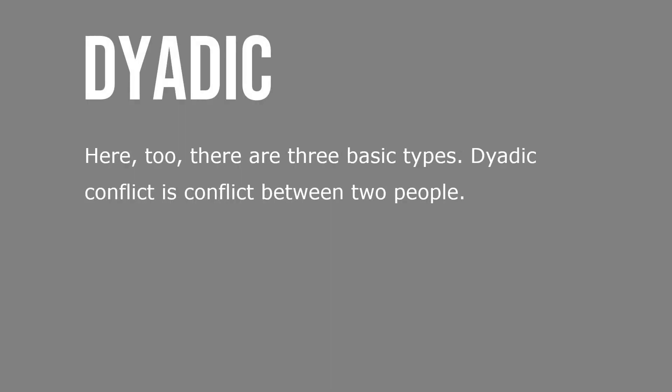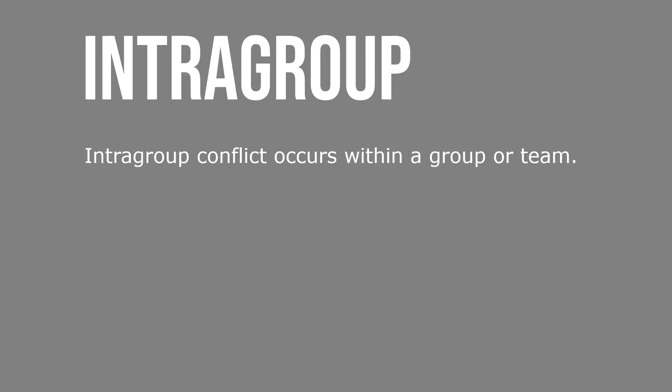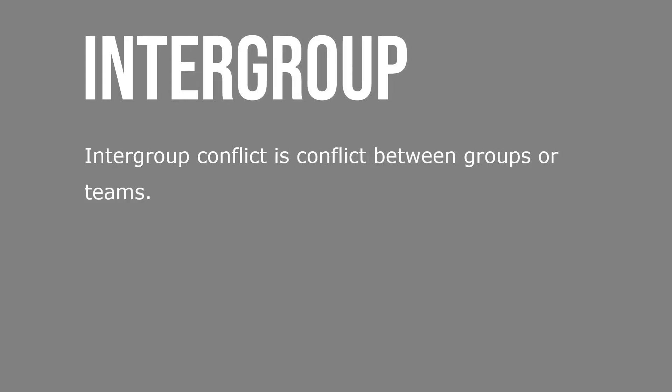Dyadic conflict is conflict between two people. Intragroup conflict occurs within a group of people. Intergroup conflict is conflict between groups or teams.